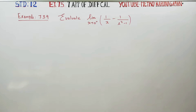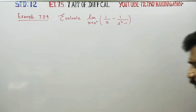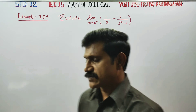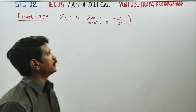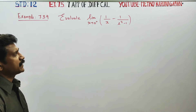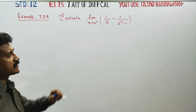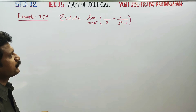Dear students, I am Metro Karanagaran. In Example 7.39, evaluate: limit x tends to 0 of 1 by x minus 1 by (e power x minus 1).